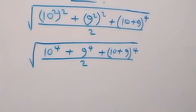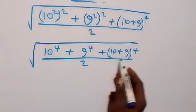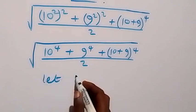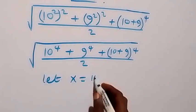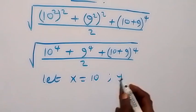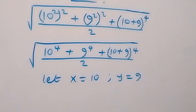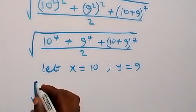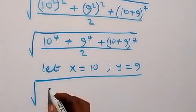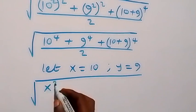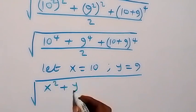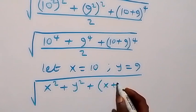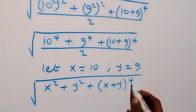From here, next we have 10 and 9. So let a letter represent each — let x equal 10 and y equal 9. That is, we write this in terms of x and y. This gives us x squared plus y squared, then plus (x plus y) all raised to power 4.